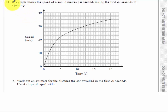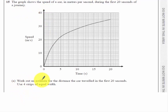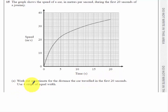Question 15. The graph shows the speed of a car in meters per second during the first 20 seconds of a journey. Part A: work out an estimate for the distance a car travelled in the first 20 seconds. Use four strips of equal width.